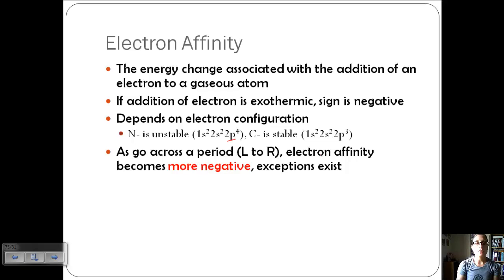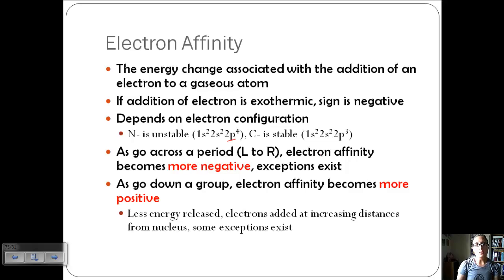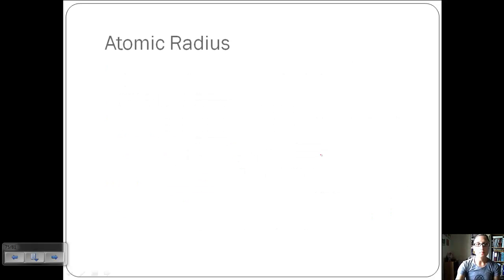In general, as you go across a period from left to right, electron affinity becomes more negative — though there are a few exceptions. As you go down a group, electron affinity becomes more positive, meaning less energy is released, because electrons are added at increasing distances from the nucleus. Again, some exceptions exist to this rule.